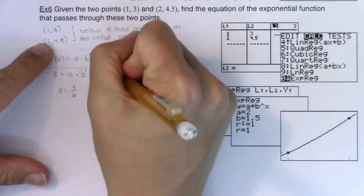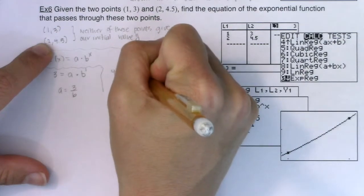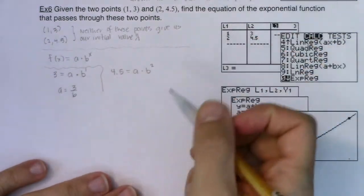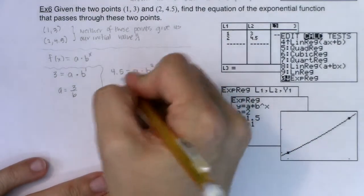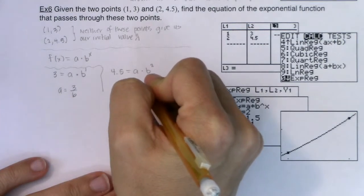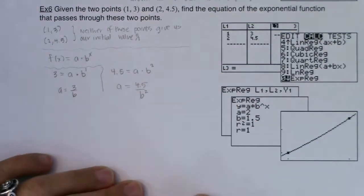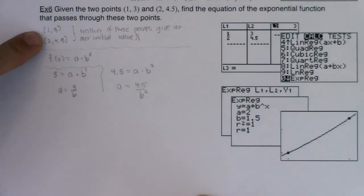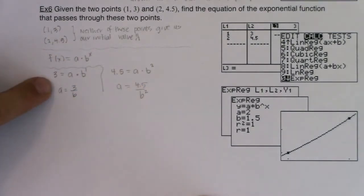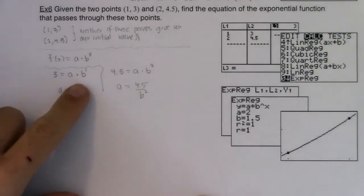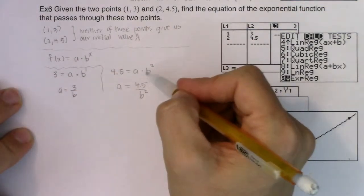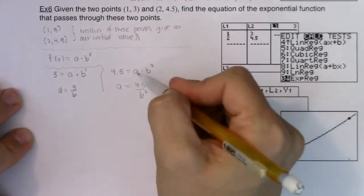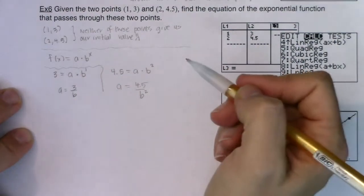Let's try plugging in our second ordered pair and see what happens. This time I would get 4.5 = a times b squared. I'm going to solve this for a again and get a = 4.5 over b squared. The reason I solved for a rather than b is that the exponent on b changes for each ordered pair, while a is always just a. So it was easier for me to solve for a.